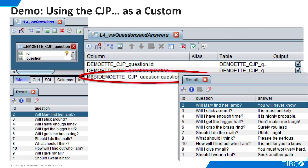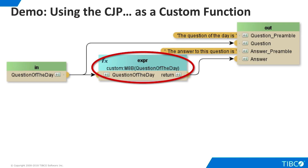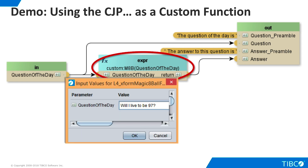Our custom function also has interesting implications for transformations. Our earlier transformation used M8B as a resource. Here, we make a new transformation that uses a slightly different approach. Instead of using M8B as a resource, we use it as a function in an expression that wraps the input parameter. We enter the parameter, which is passed to the expression, and the answer is returned.